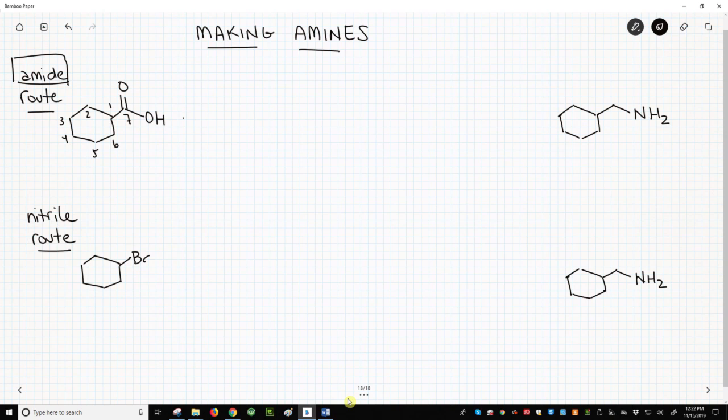So to convert the acid into an amide, we'll first react this acid with SOCl2, thionyl chloride, that gives the acid chloride.